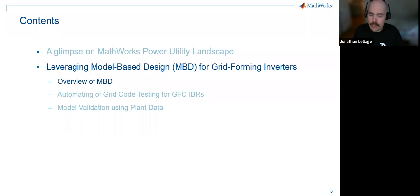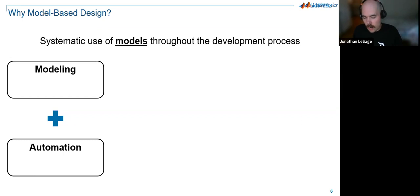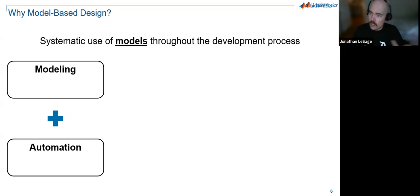Model-based design is the idea of leveraging models — whether first-principles models created using equations or schematic representations — but also being able to automate and streamline things throughout the process. As we've seen increased grid codes — IEEE 1547, 2800, ERCOT-specific requirements — being able to automatically test all these different grid codes and validate that commissioned systems actually adhere to all regional requirements is one of the key things we'll show today.